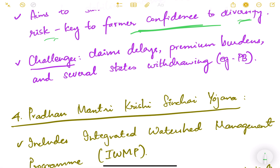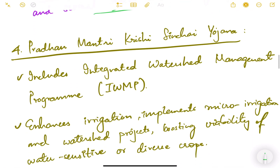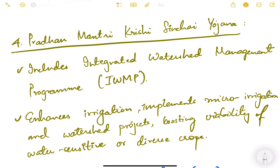There are practical challenges with Fasal Bhima Yojana: claim delays — even when farmers file claims for crop losses there are delays in payments — and several states are withdrawing from it. For example, Punjab is withdrawing, with political reasons cited, and some state governments feel the scheme is not very practically useful for farmers.